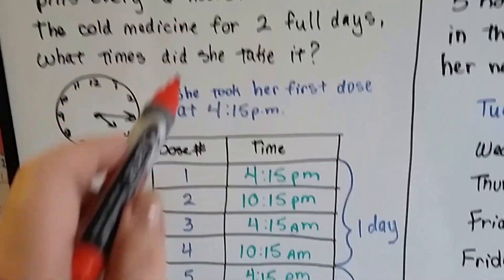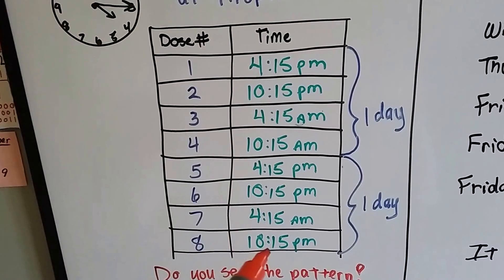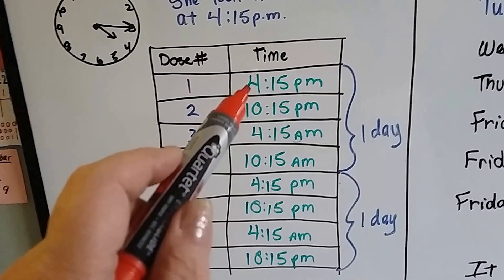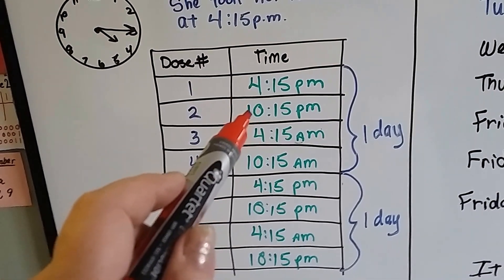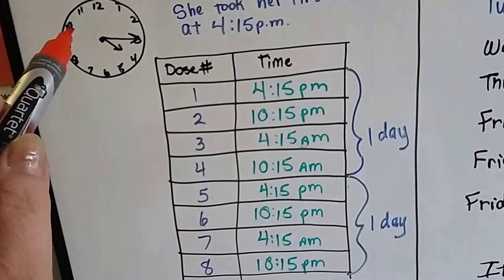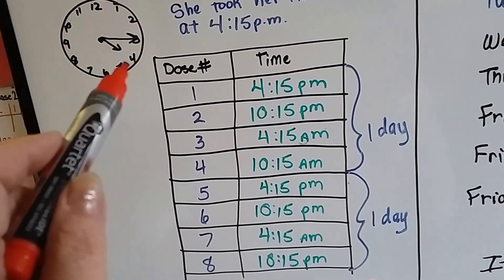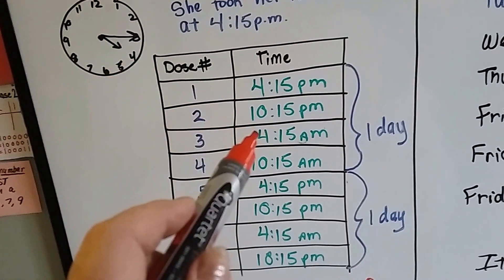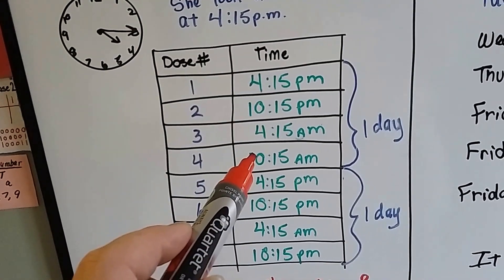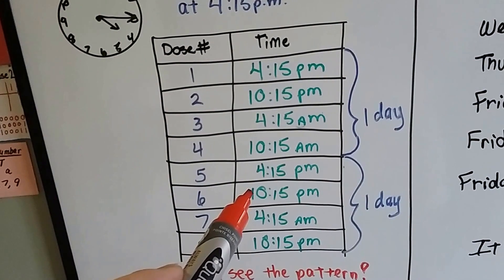We know she took it every six hours. It's very easy to see how many doses she took, how many days it went by, and what times she took it. 4:15 was the first one. We add six hours and that takes us to 10:15 p.m. Takes us to 10 right here. And if we add six more hours, one, two, three, four, five, six, it brings us back to 4:15, but now it's a.m. Six more hours and it would be 10:15 a.m., and another six hours is 4:15 p.m. Another six hours would be 10:15 p.m.